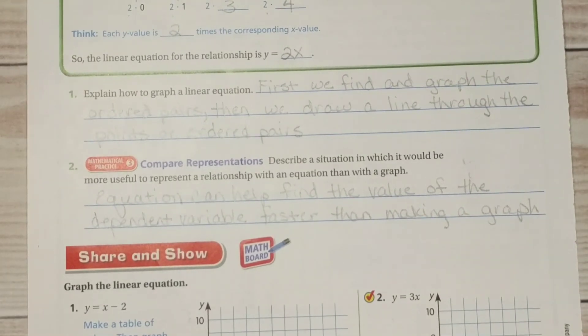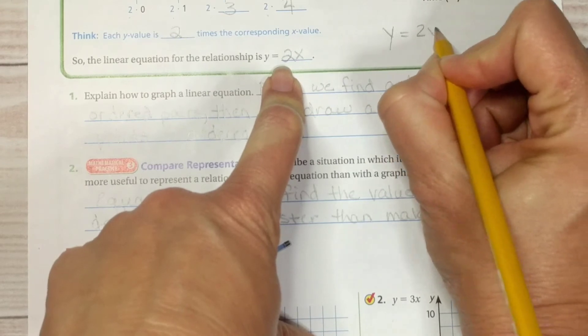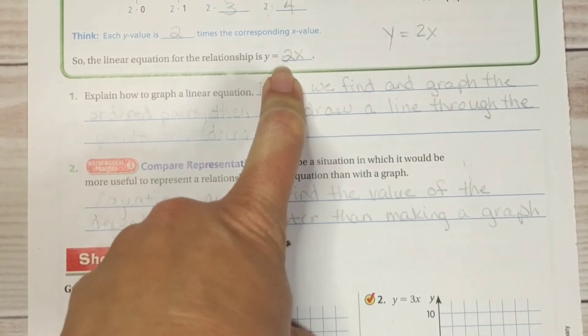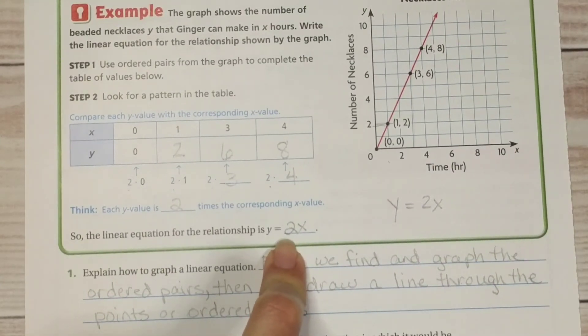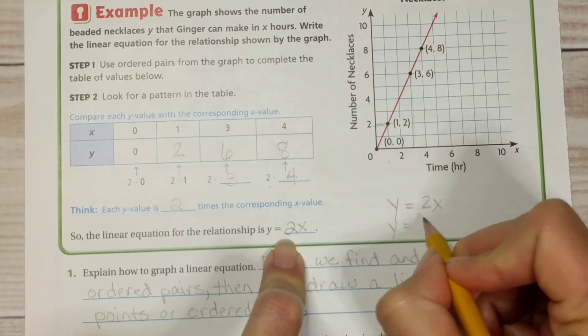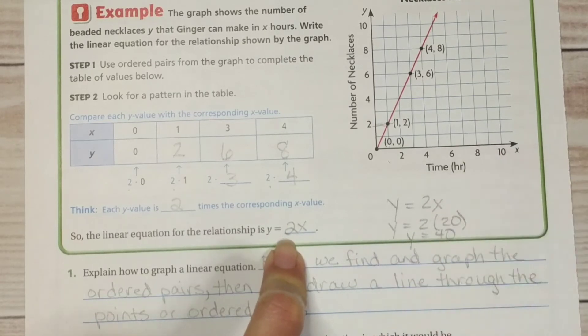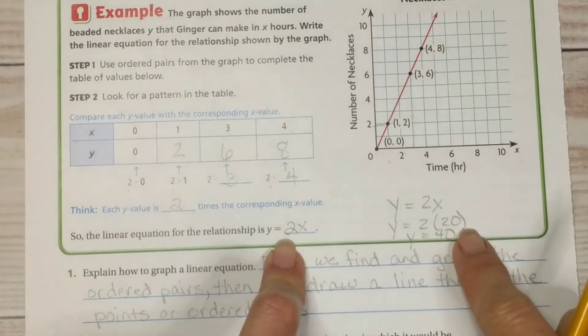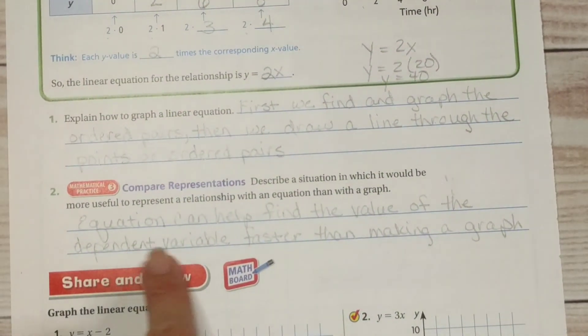Faster than making a graph. So if I went back to this example up here sometimes it's faster to use an equation than a graph. So let's say my equation here is y equals 2x. If x was oh let's say 20 that would be an awfully big graph wouldn't it.